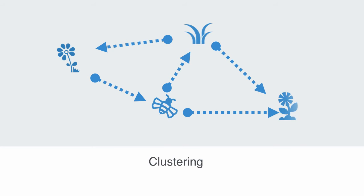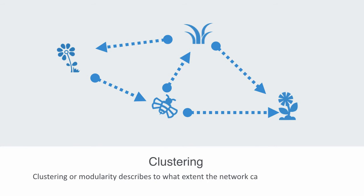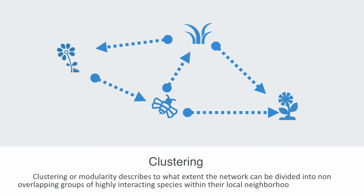Previous network analysis studies have revealed that ecological networks exhibit the important characteristic of clustering, found in many different networks. Clustering, or modularity, describes to what extent the network can be divided into non-overlapping groups of highly interacting species within their local neighborhood. A module or cluster is a set of species that have a disproportionate number of connections within their module as opposed to connecting to other modules.